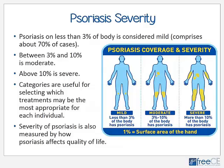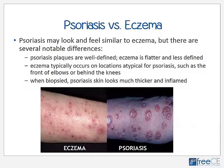Psoriasis is considered mild if it covers less than 3 percent of the body, which comprises approximately 70 percent of cases. It is considered moderate if it covers between 3 and 10 percent, and severe if over 10 percent. These categories help in selecting appropriate treatments, though severity is also influenced by quality of life and the individual's sensitivity to their appearance. Eczema is often confused for psoriasis and vice versa.